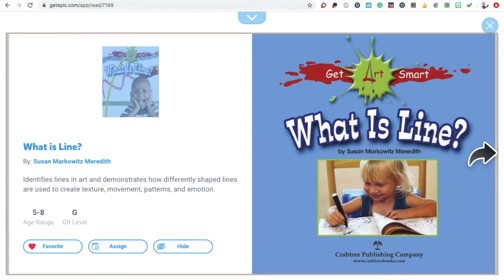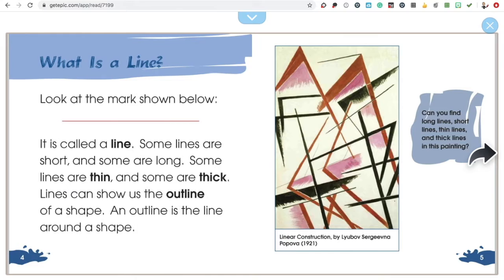What is Line by Susan Markowitz Meredith. It is called a line. Some lines are short and some are long. Some lines are thin and some are thick. Lines can show us the outline of a shape.